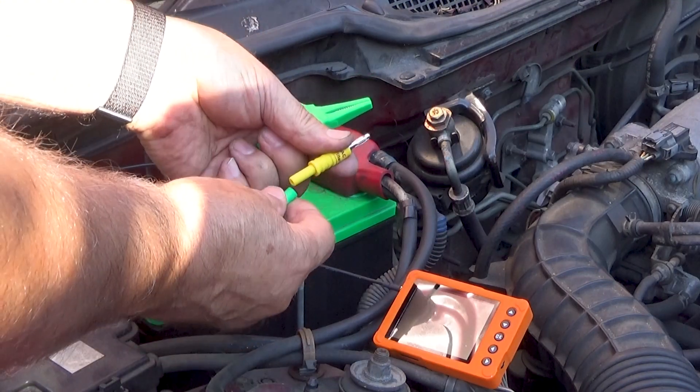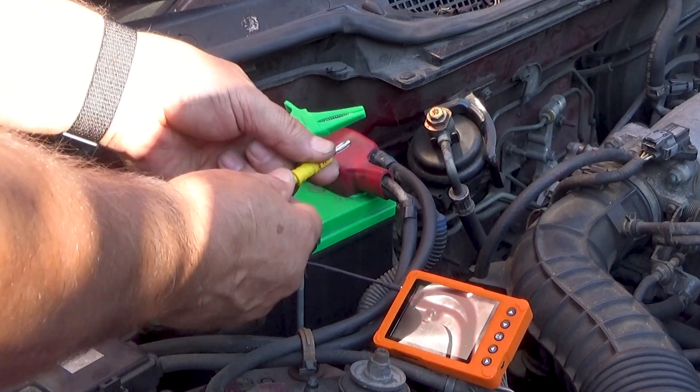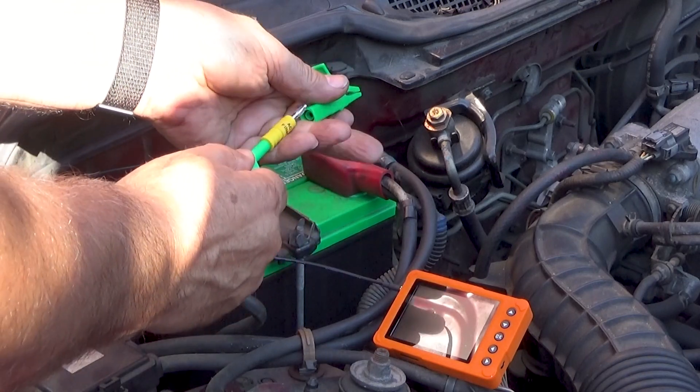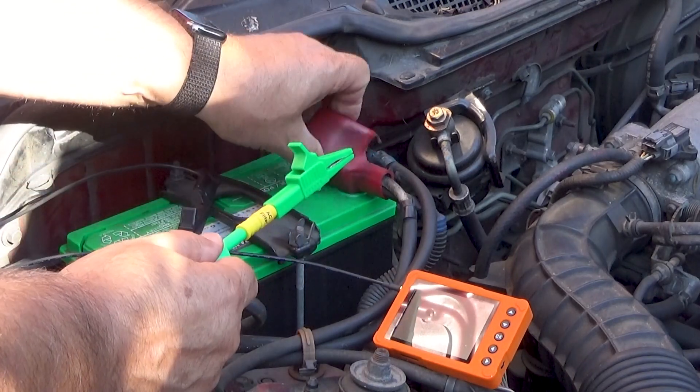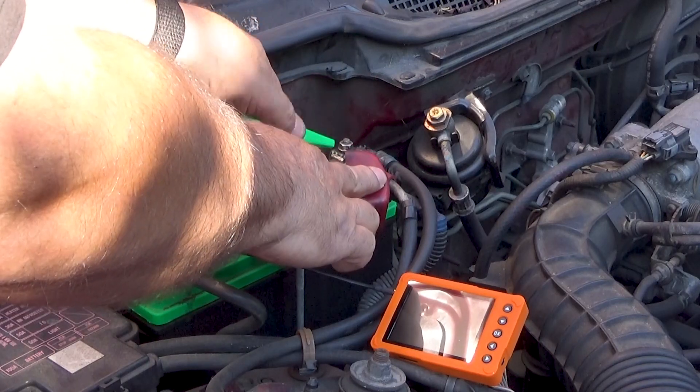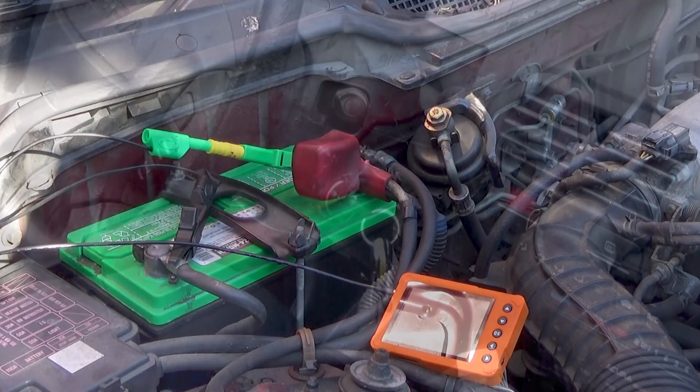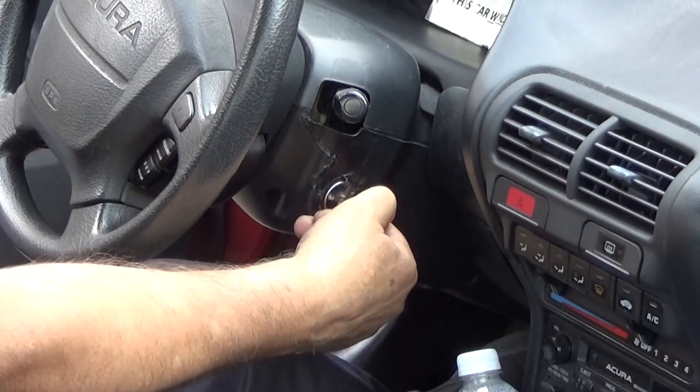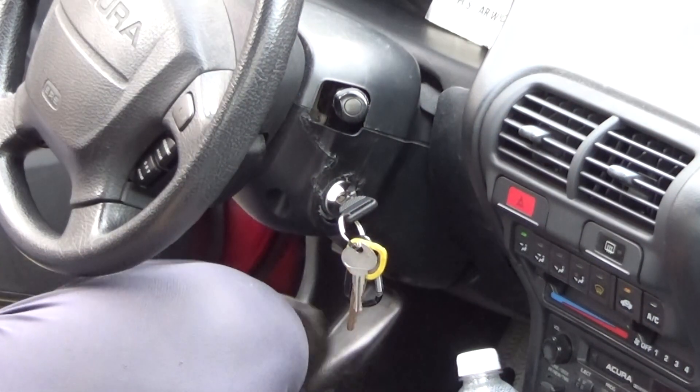Connect the black lead to the negative post, and on the positive lead, we need to put the AC filter between the lead and the alligator clip. Then, clip the green alligator clip to the positive battery post. Start the car, and turn on a high load accessory like your air conditioning.